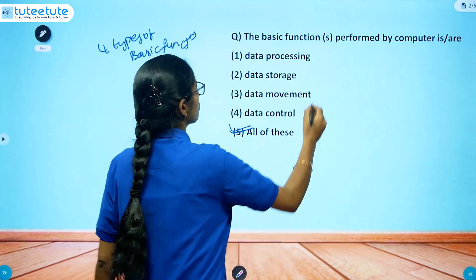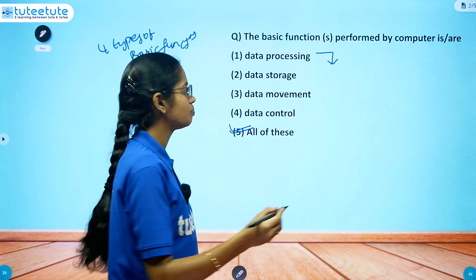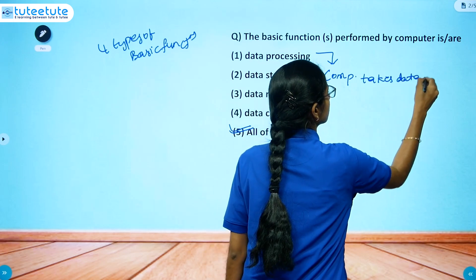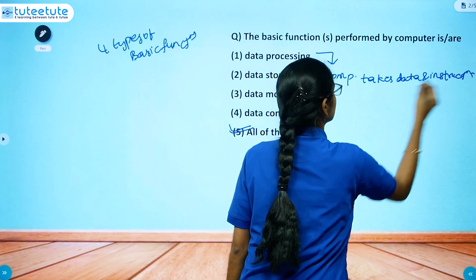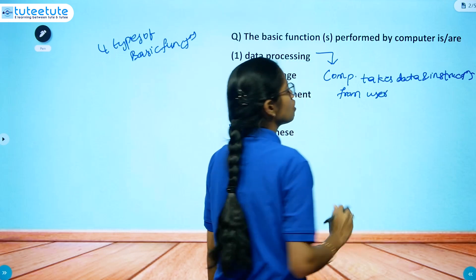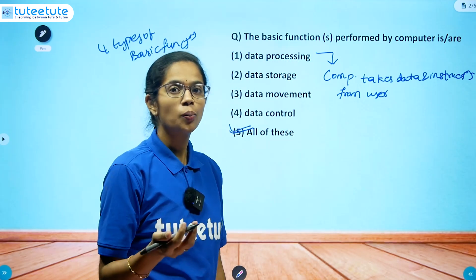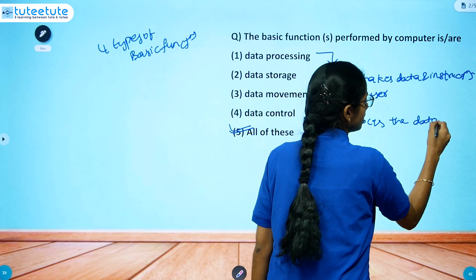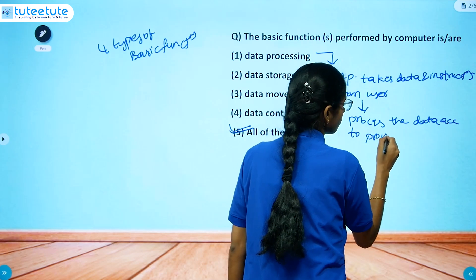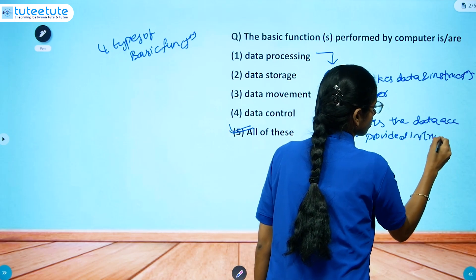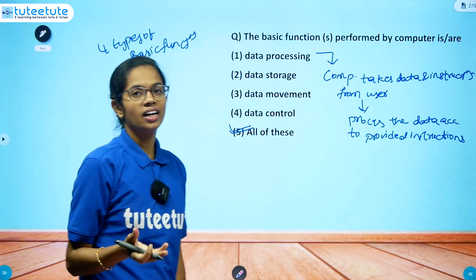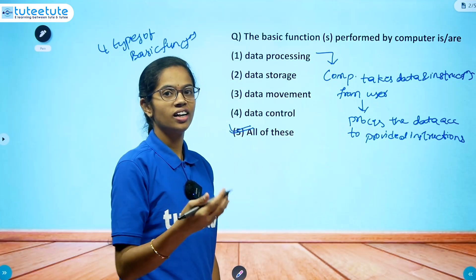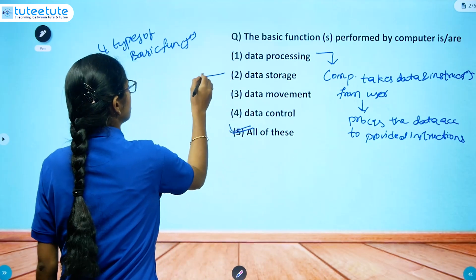First, what is data processing? When the computer takes data and instructions from the user, data processing aims to process the data according to provided instructions. So when the computer takes data and instructions from the user, it processes the given data according to the provided information.